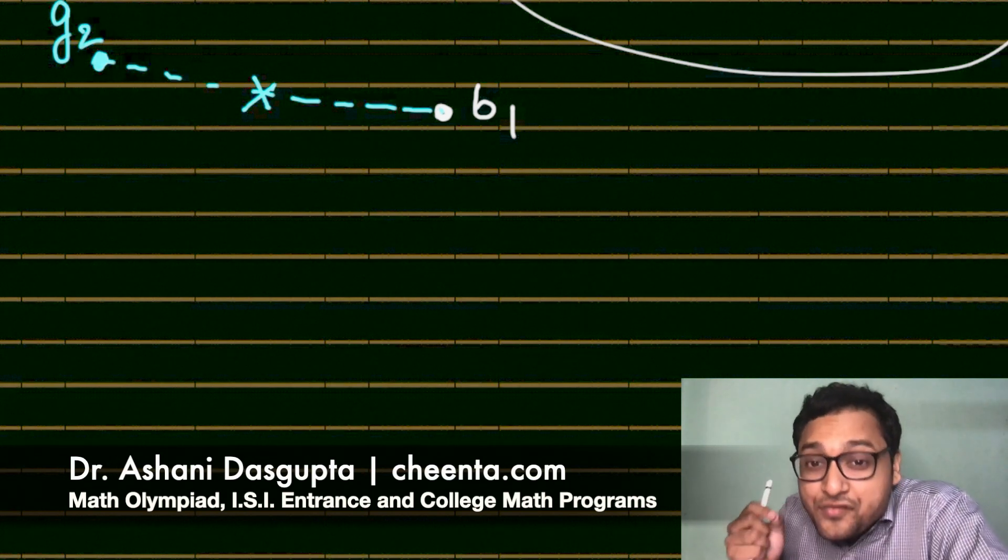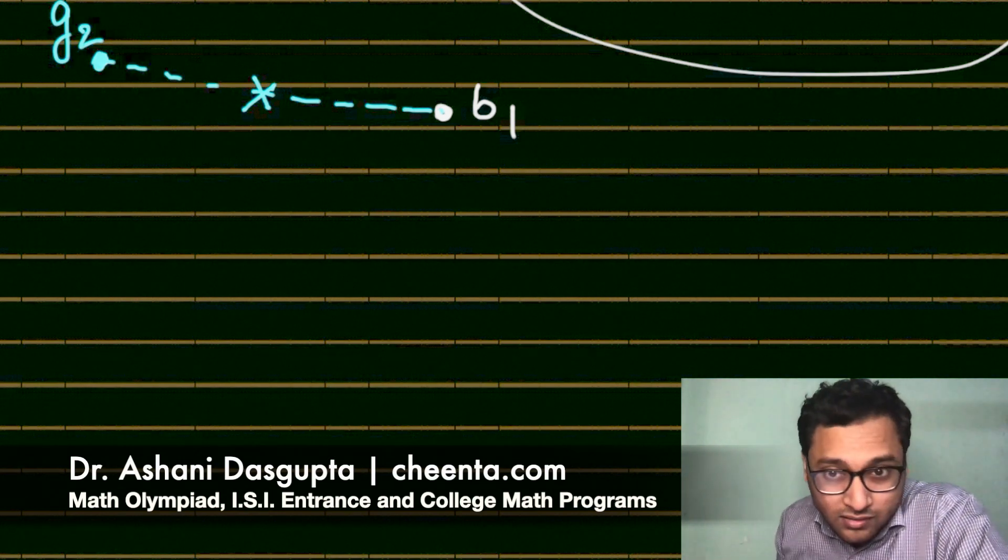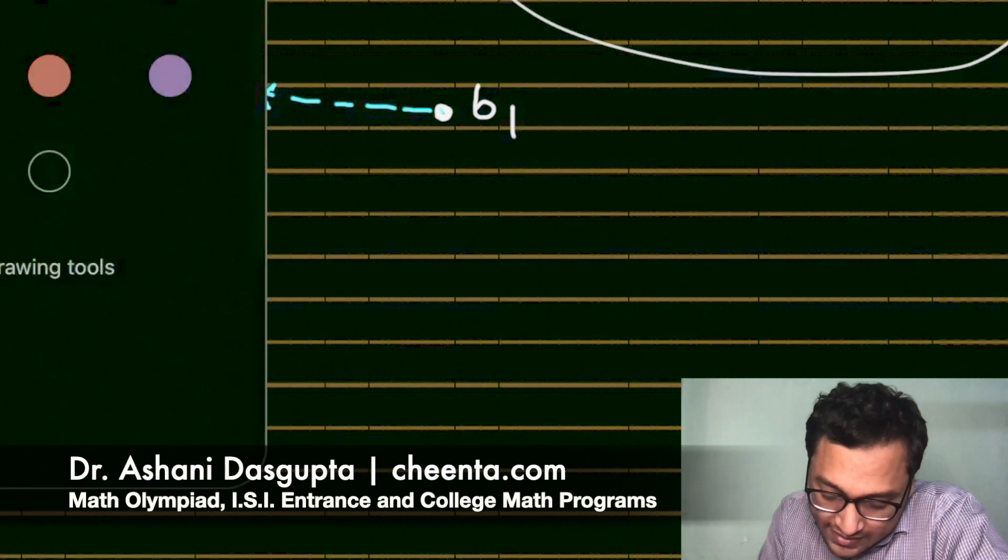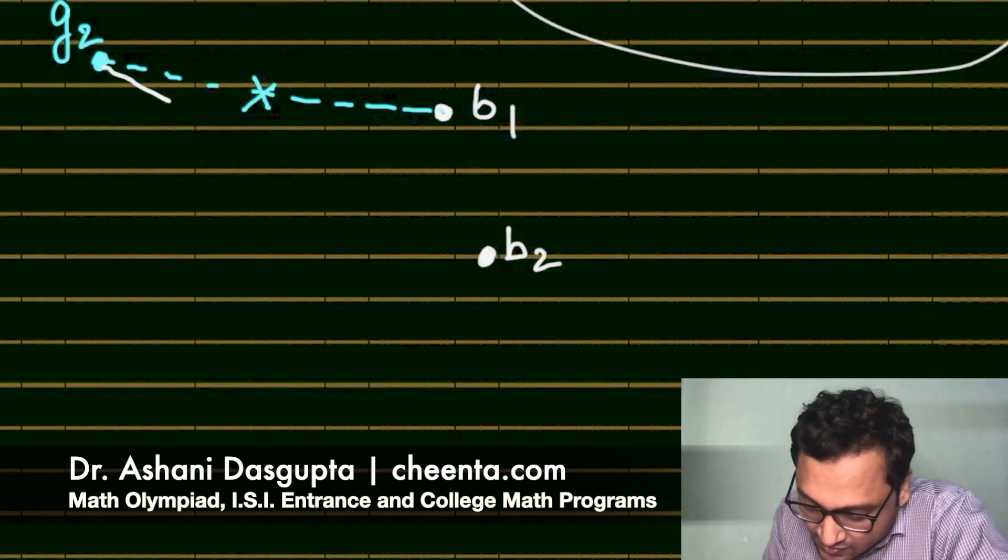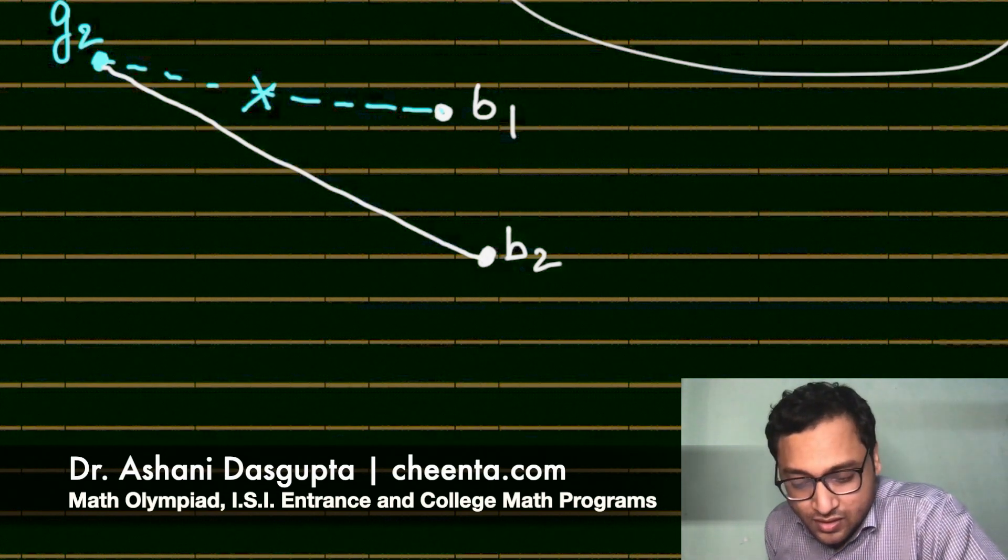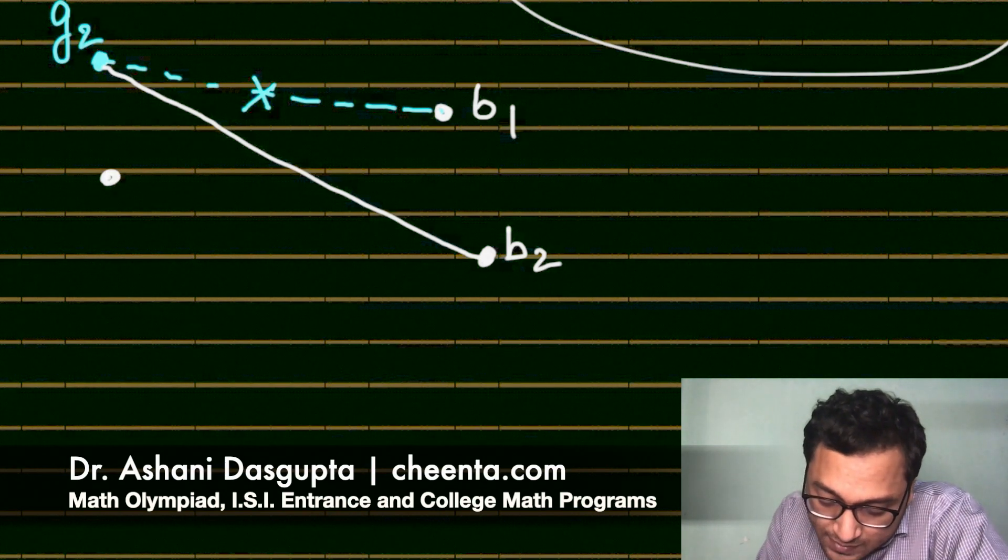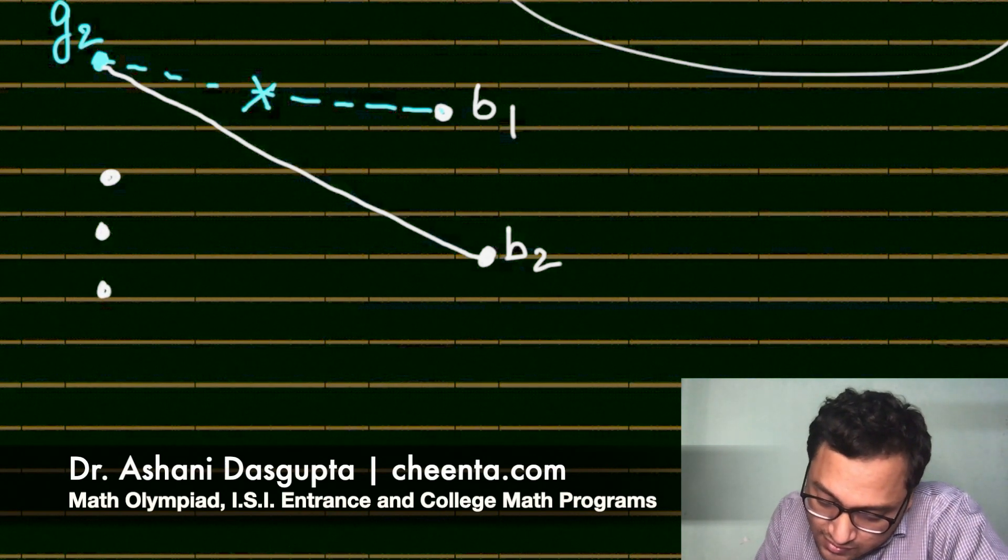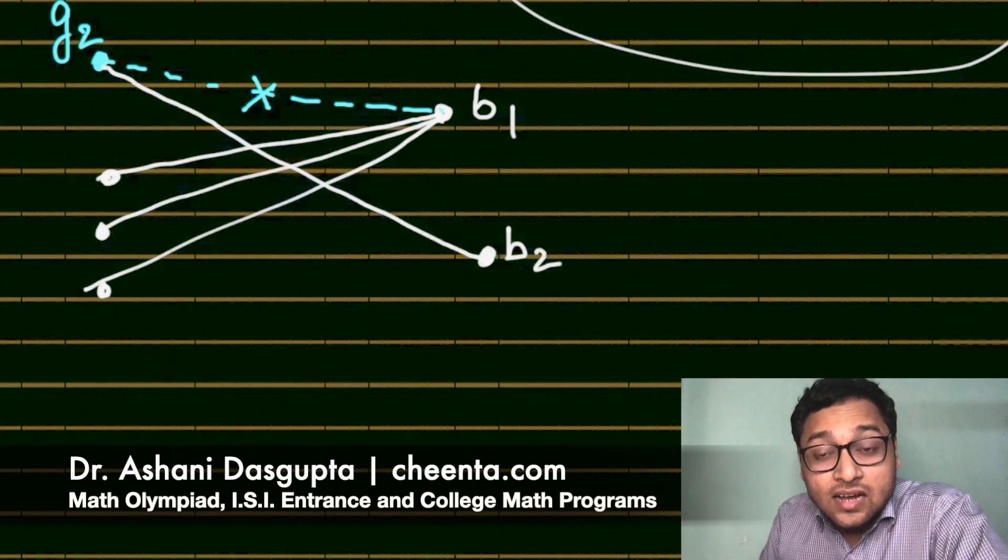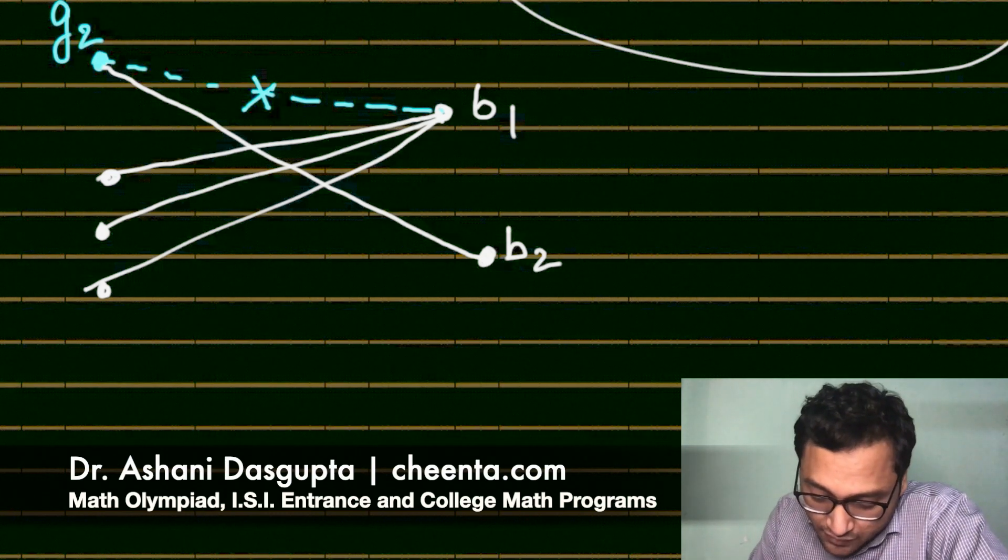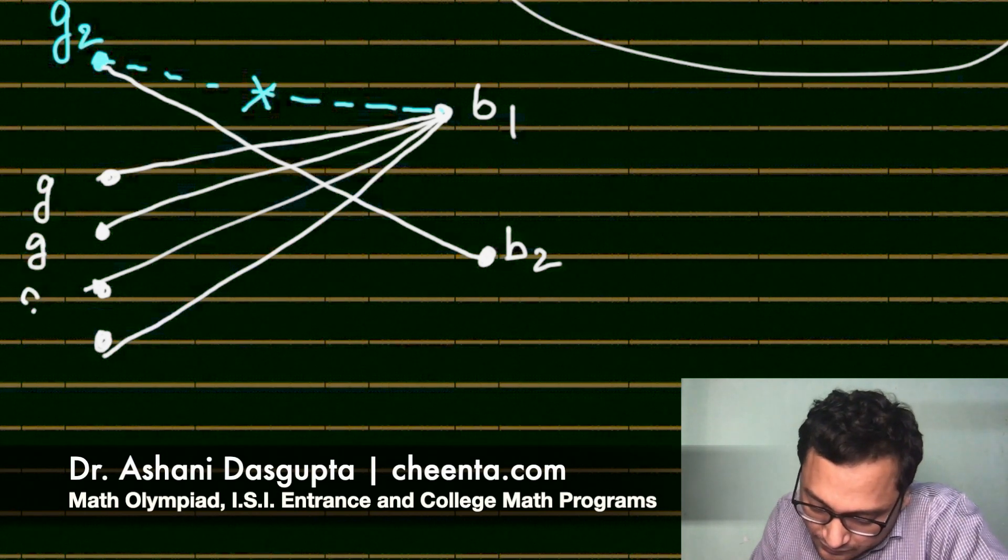So there is at least one girl with whom B1 has not danced. We have named it G2. Now, since every girl dances with at least one boy, G2 must have danced with someone. Let's call that person B2. So G2 has danced with B2. All right. So remember, B1 could have danced with many, B1 has danced with many other girls. So I could have joined these. In fact, B1 has danced with most number of girls. So there are many of these dots to which B1 is connected with.